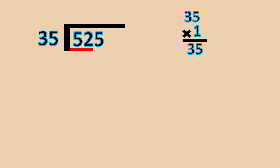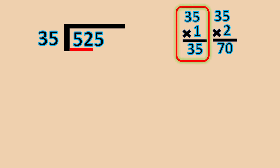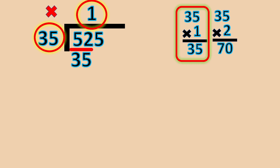Now, how many times 35 will it take to 52? We need to take the number that is closest to 52 without going over. Let's try: 35 times 1 is equal to 35; 35 times 2 is equal to 70 — pretty close, but we went over. So we will use 35 times 1 is equal to 35. We write the 1 above the 2. Subtract: 52 minus 35 is equal to 17.